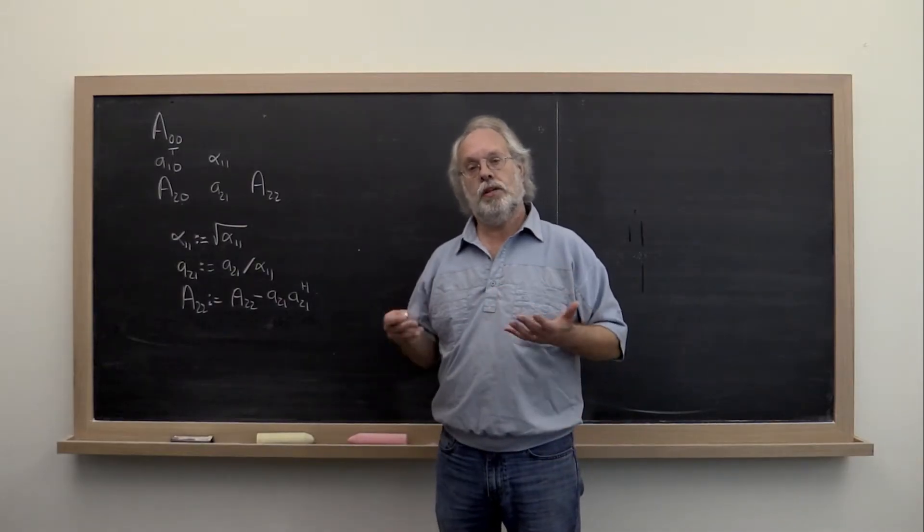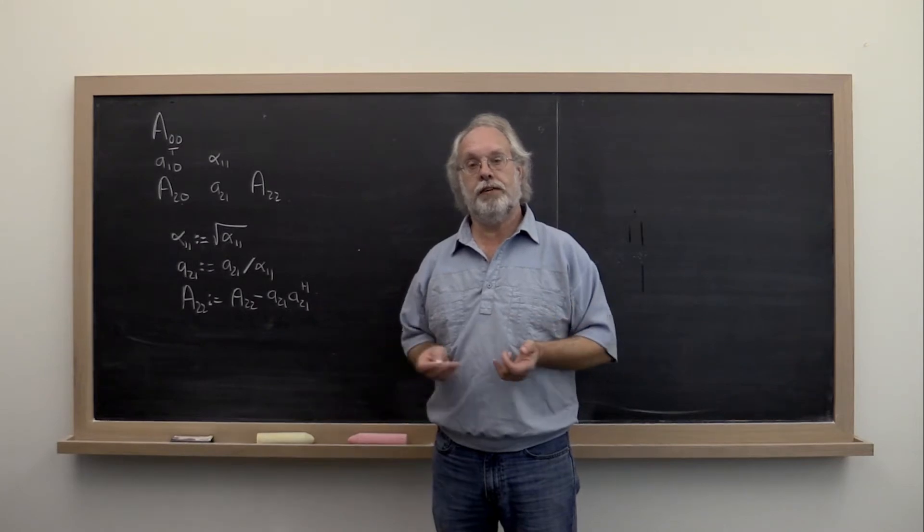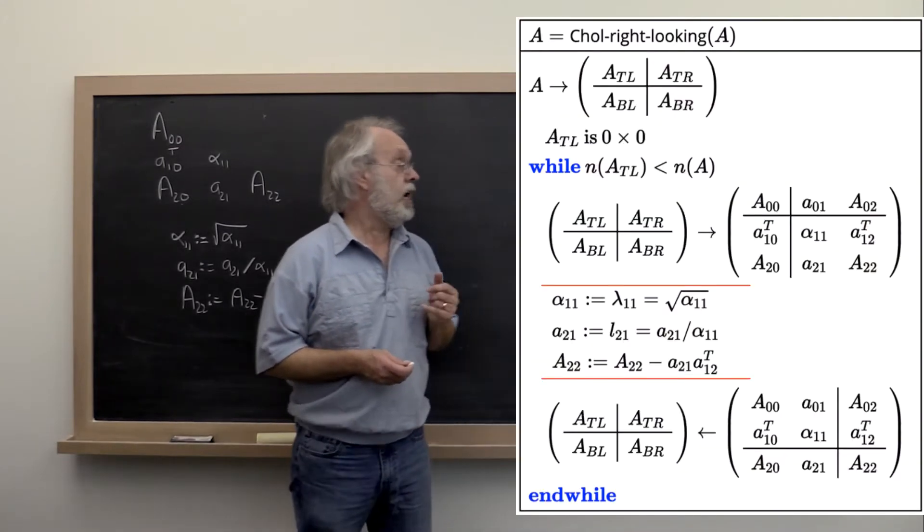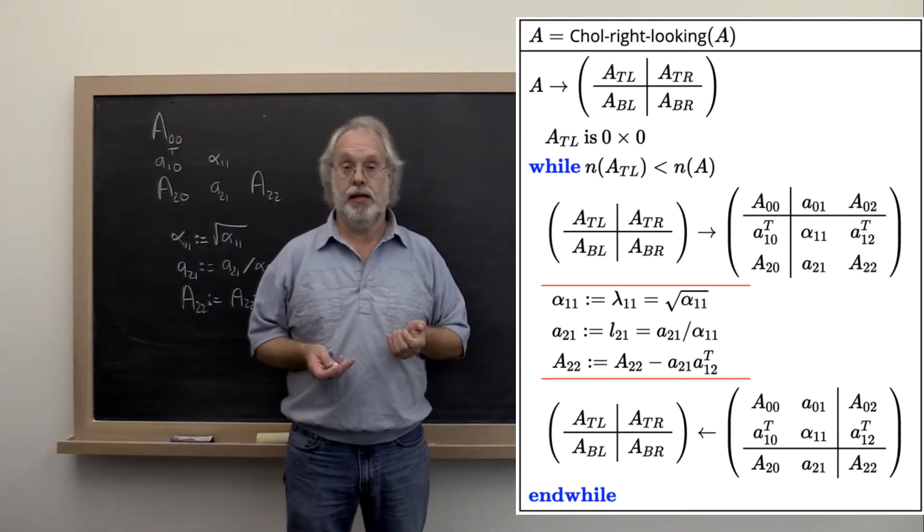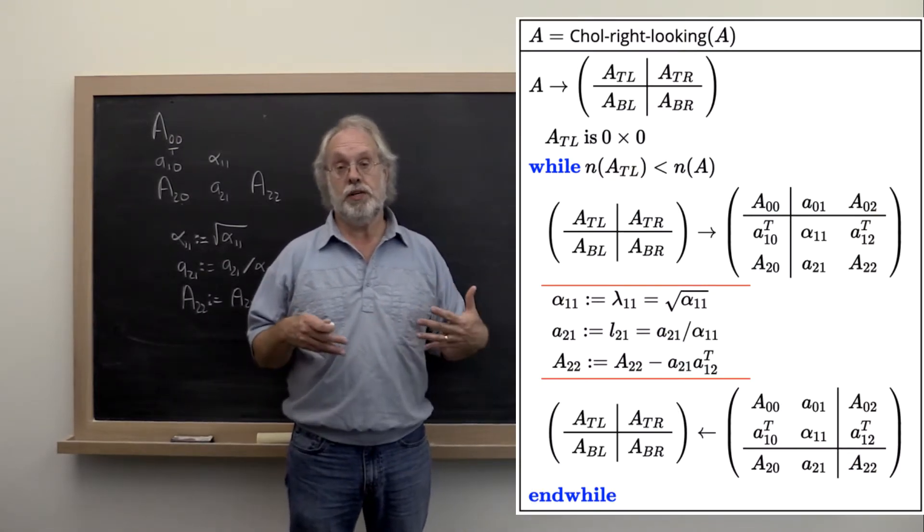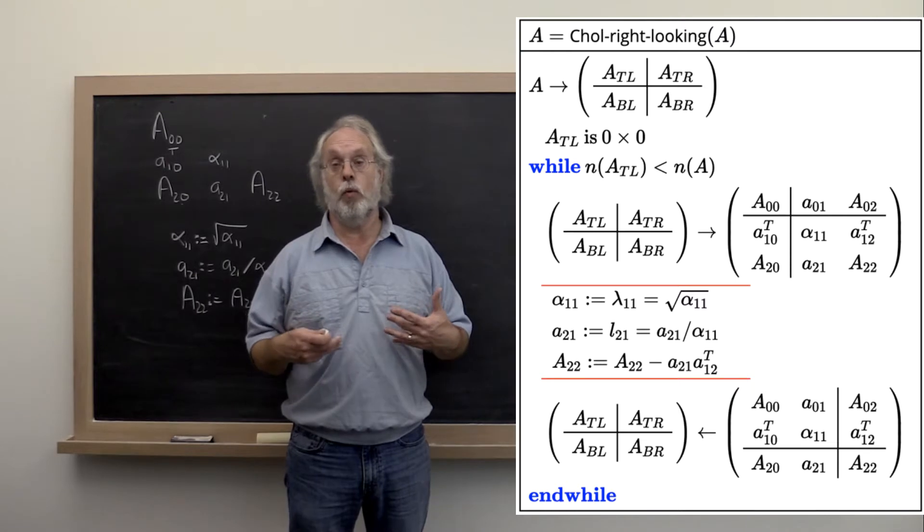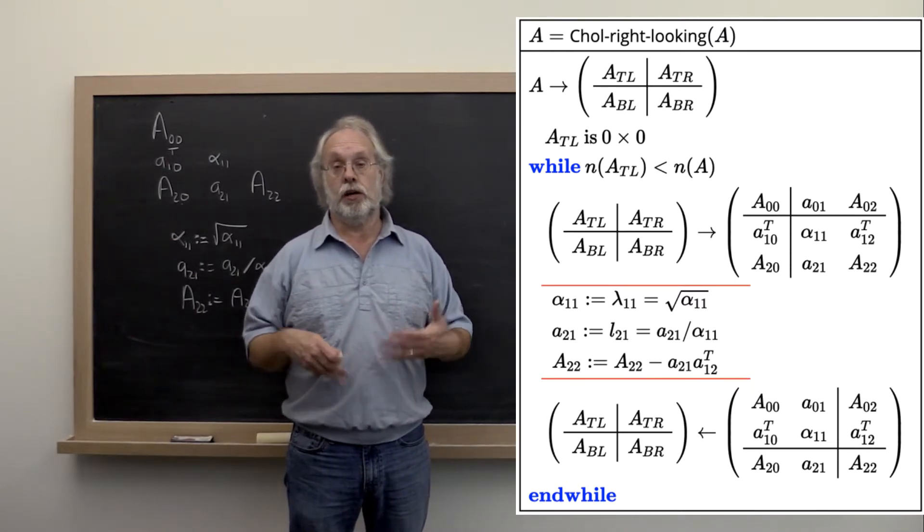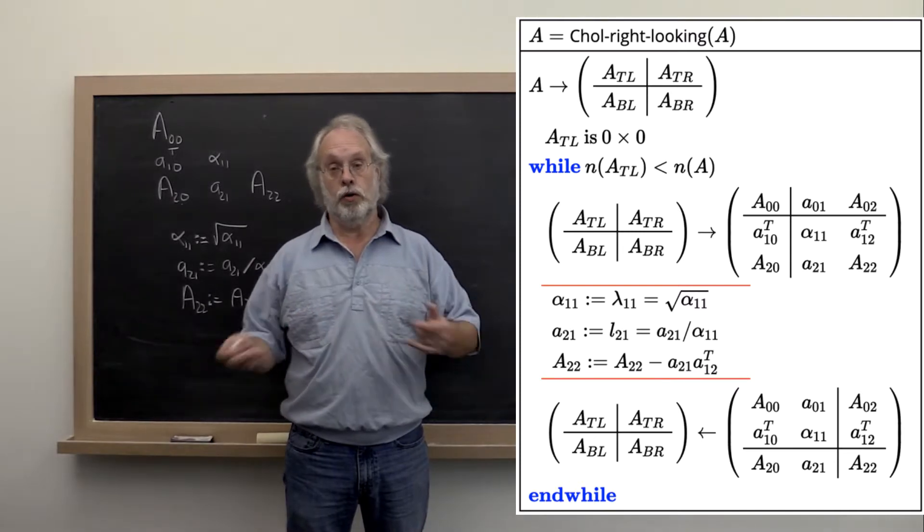Let us analyze what the cost of computing the Cholesky factorization is. So over here we have the algorithm and what we're going to do is analyze what the cost of one iteration is, a typical iteration, and then we're going to look at how to sum it over all iterations.